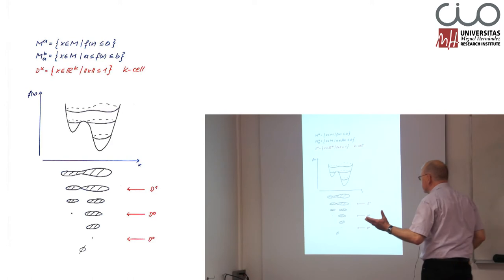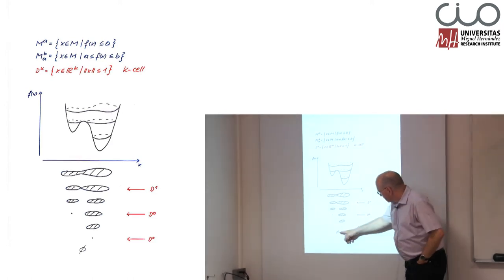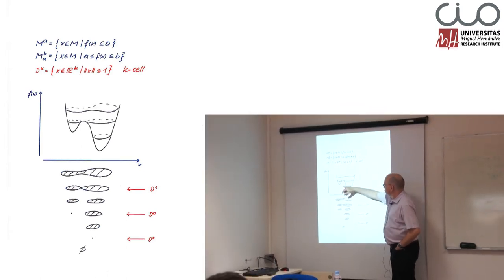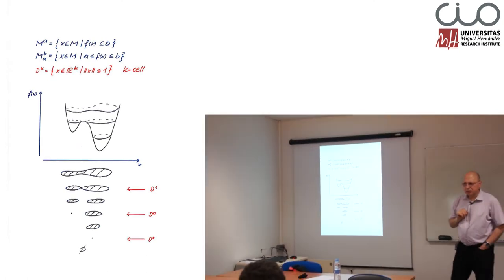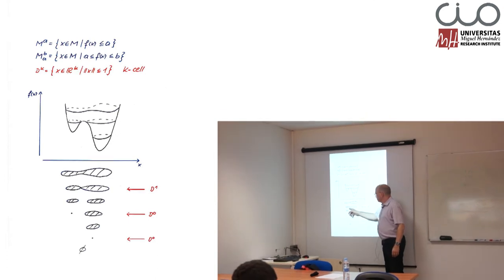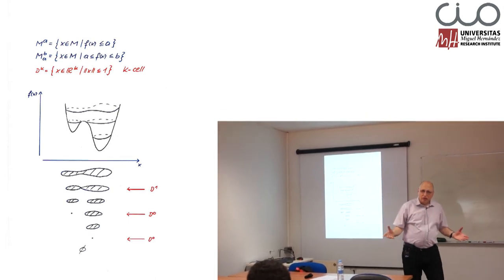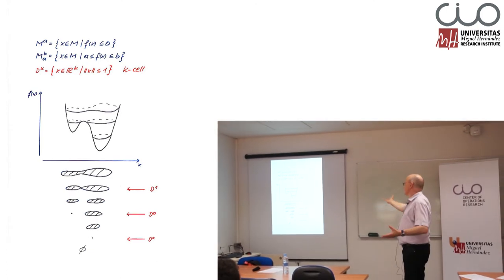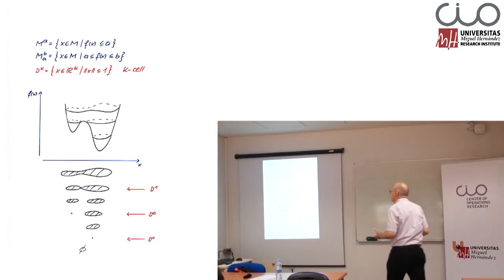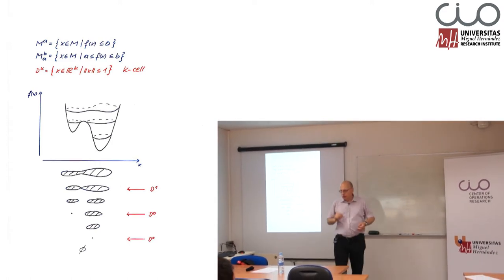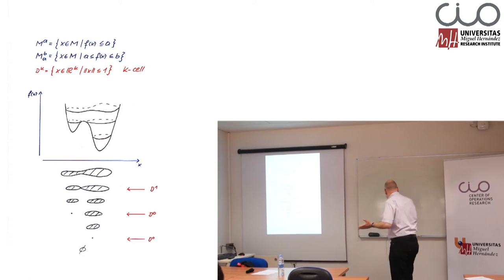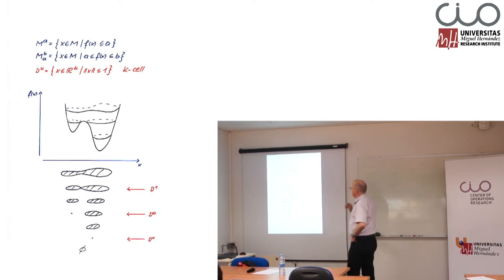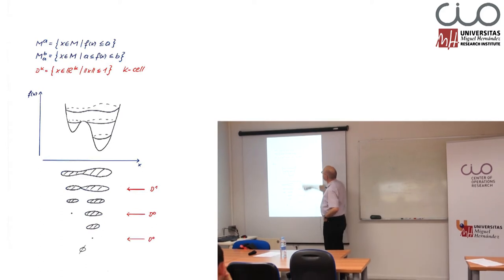So we have three changes. The first two changes appear when a new component is born — that is when we cross a level which contains a local minimizer. The third change happens when both components are glued together. The question is: how can we describe these changes? It is obviously not clear where the relationship is between properties of F and the change of the topological structure. And the Morse theory states the following.